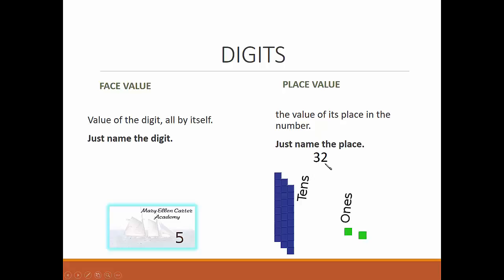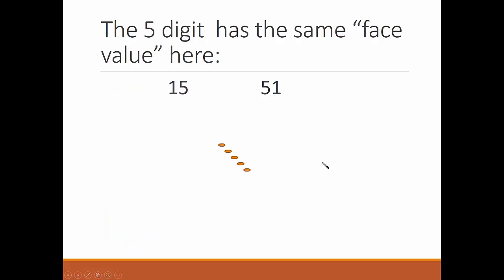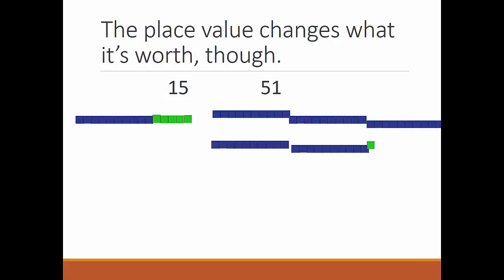The five digit has the same face value here and here. There's five of something in each number. The place value changes what it's worth, though. 15 is a lot smaller than 51, and in the tens place, the five represents 50.